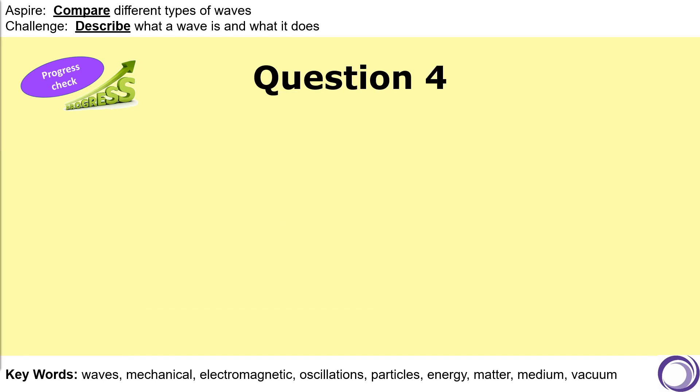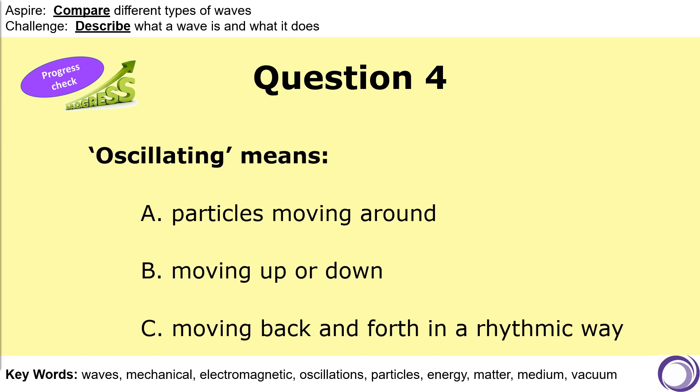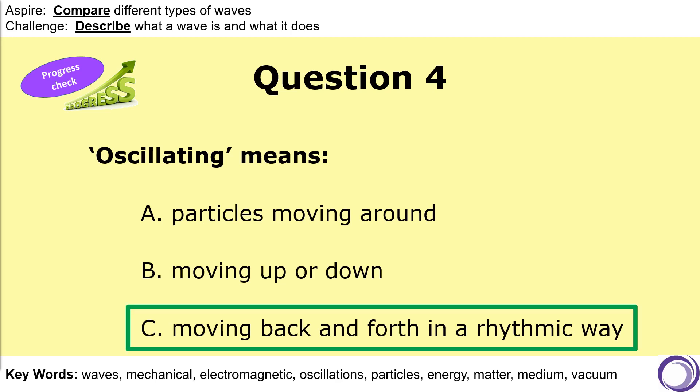And finally, question four: what does the term oscillating mean? Is it when particles move around? Is it when particles either move up or down? Or is it when particles move back and forth in a rhythmic way? The answer is C. Oscillating, which means the same thing as vibrating, is when particles move backwards and forwards in a rhythmic direction. This could be up or down, or it could be side to side.